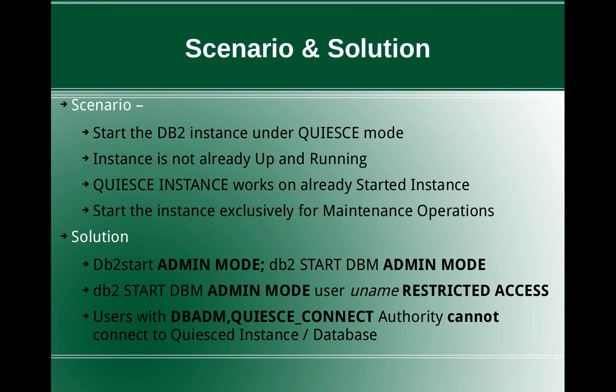Another important feature is when you start the DBM in admin mode, you can also use the keyword restricted access, which means the instance will be started, it will be quiesced, and it will be put in a restricted state. In a restricted state, users with DBADM or quiesce connect authority cannot connect to the quiesced instance or the database. If restricted access is not used — say you only use DB2 start DBM admin mode — then a user with DBADM access will still be able to connect and attach to the instance. That is the main difference between restricted access and non-restricted access.